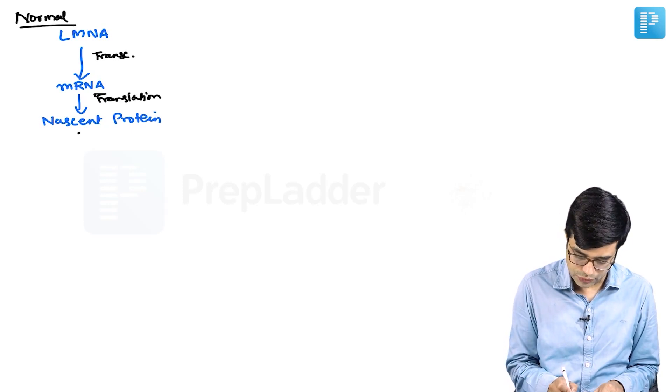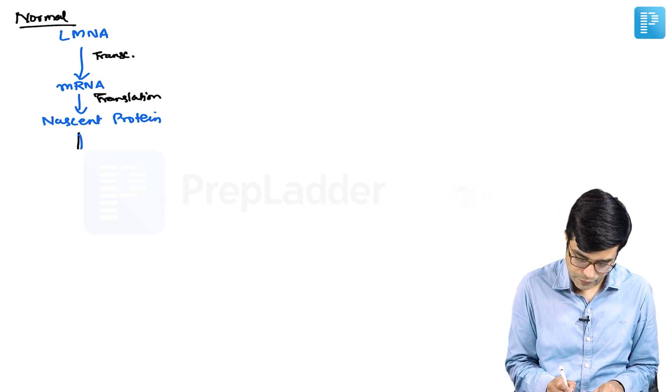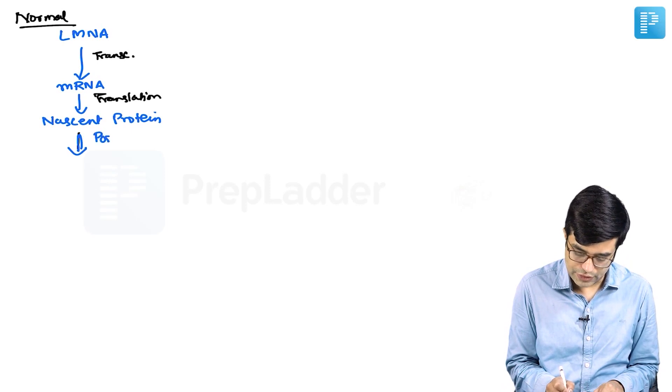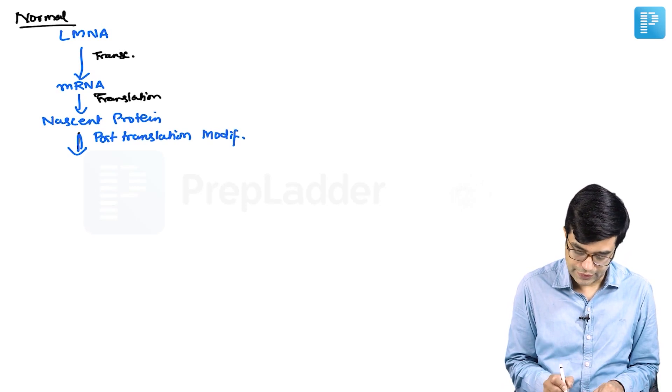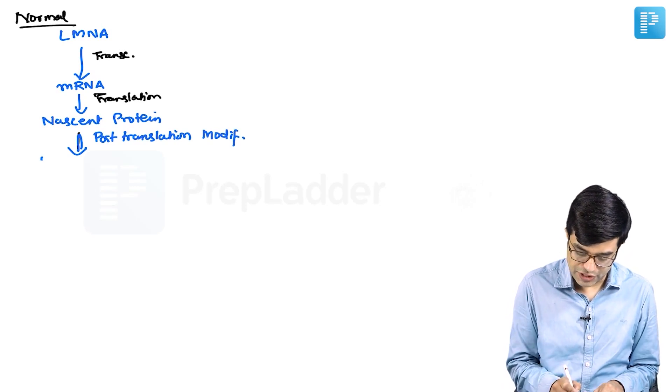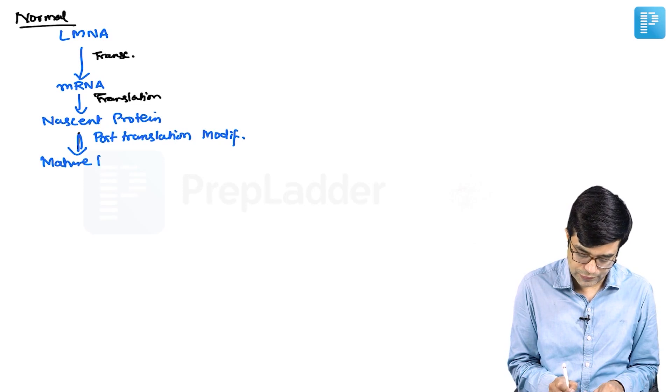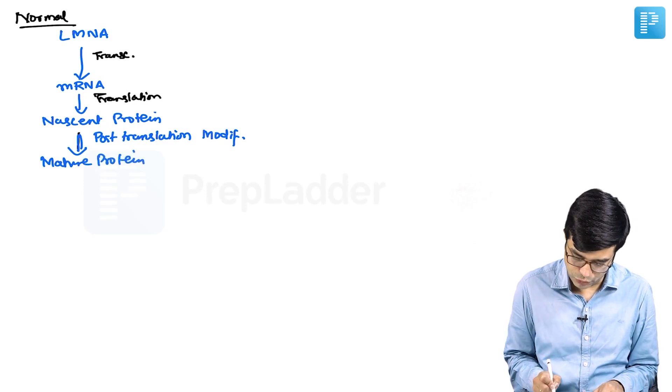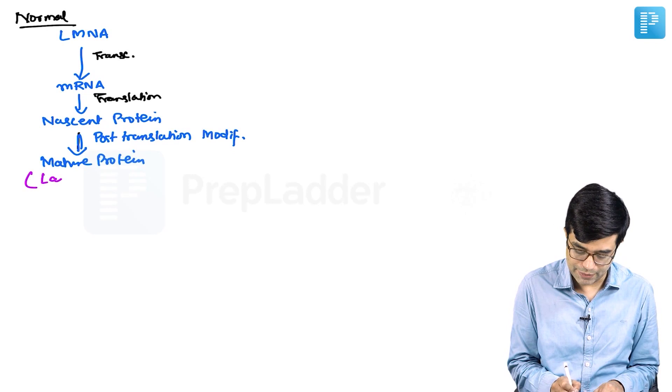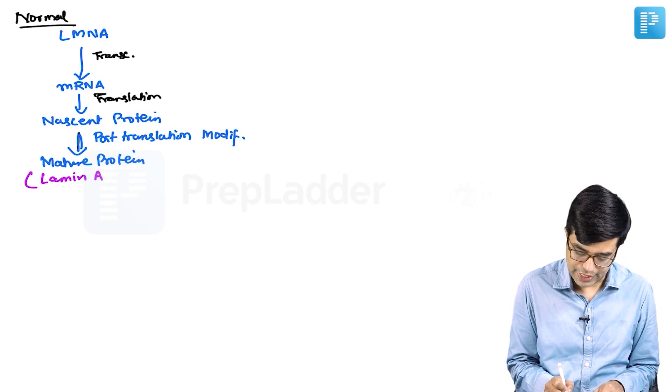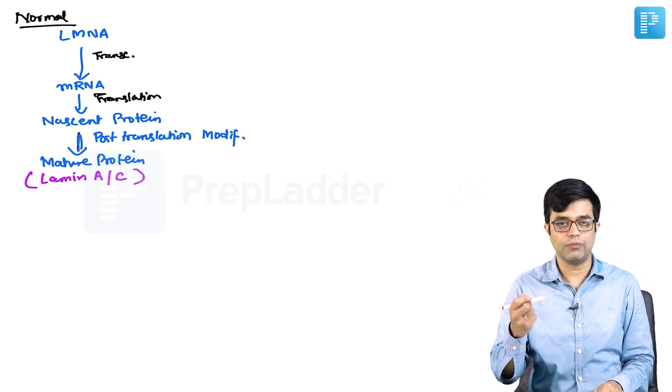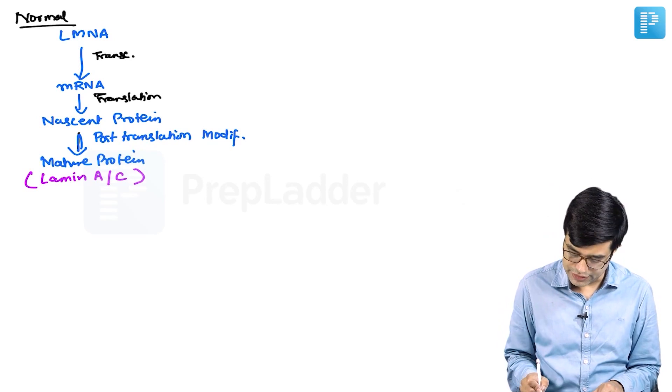This nascent protein undergoes post-translational modification which forms mature protein. What is this mature protein? This mature protein is lamin A and lamin C, written as lamin A/C.